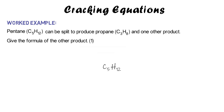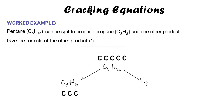We start with C5H12 and we know it splits into C3H8 and one other product. The easiest way is to draw out the carbons and hydrogens. Pentane has five carbons, and three of those are used in forming the first product. Cross them out — three have been used, so two are left to form the second product. The formula will start with C2.